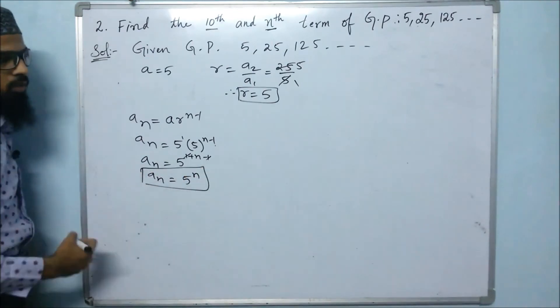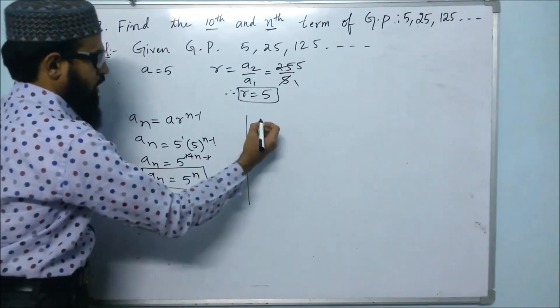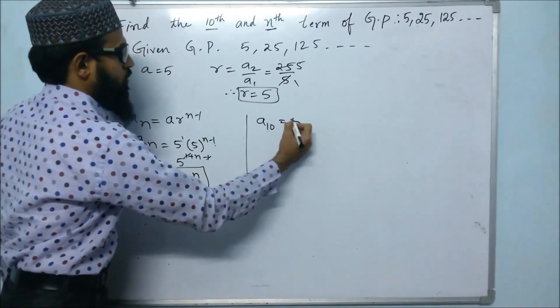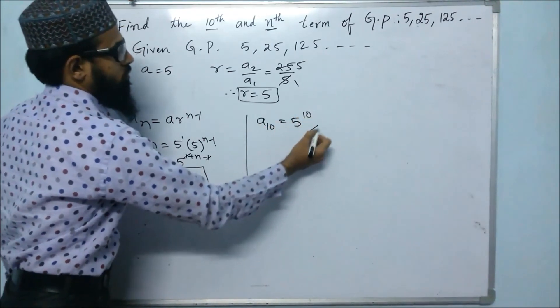With this, we got the nth term. We have to find the value of 10th term. So a10 = 5^10.